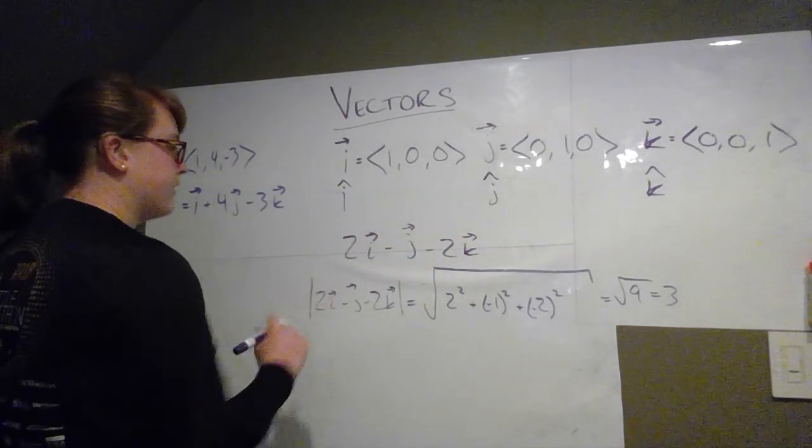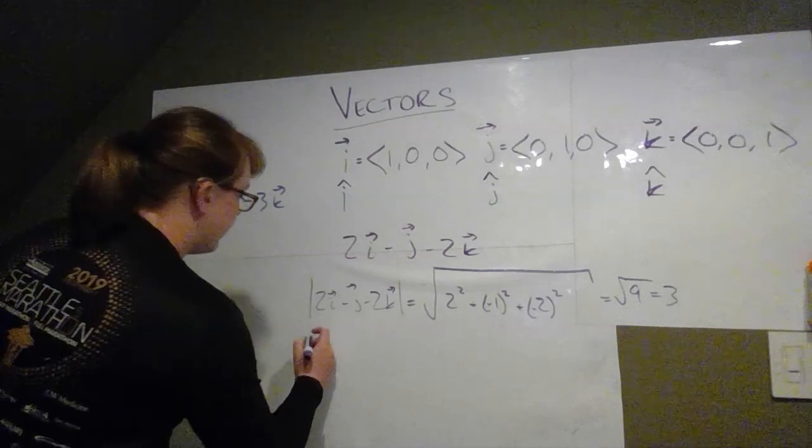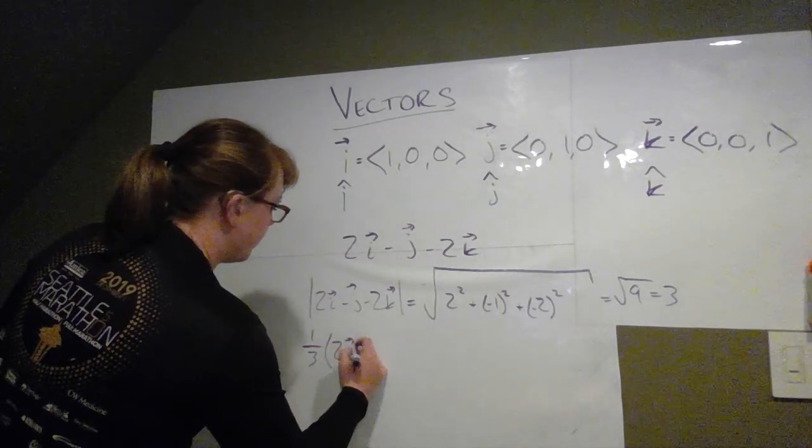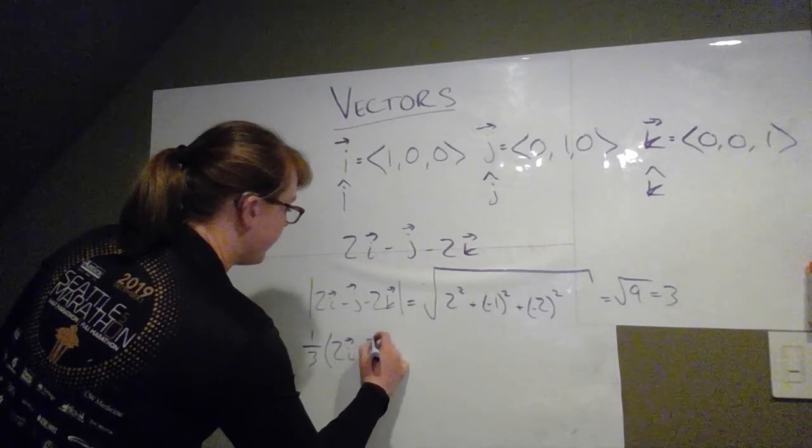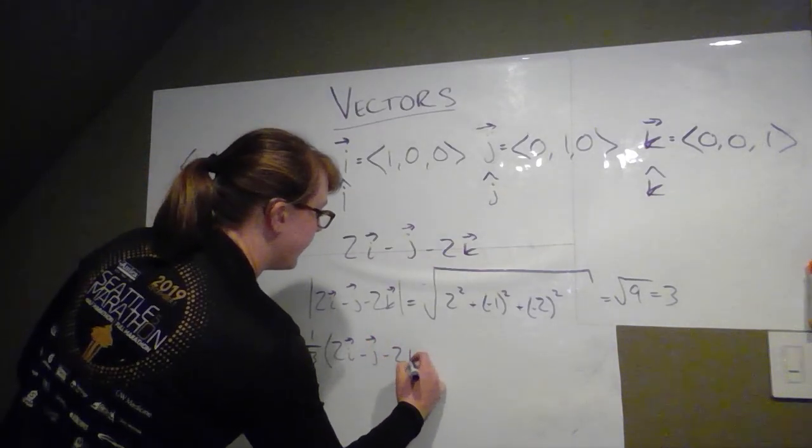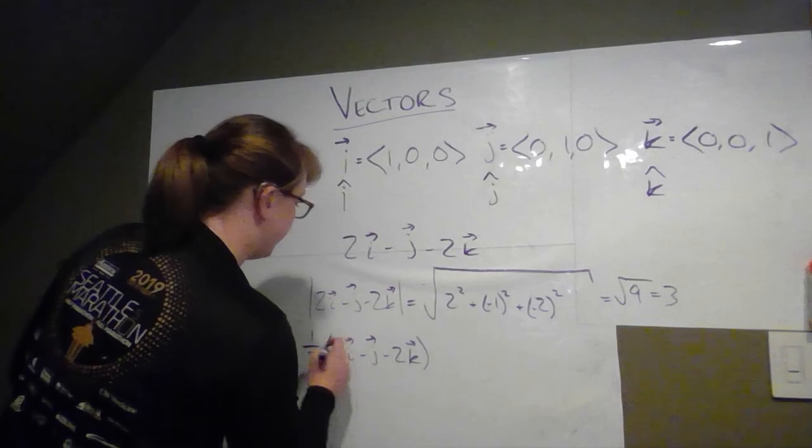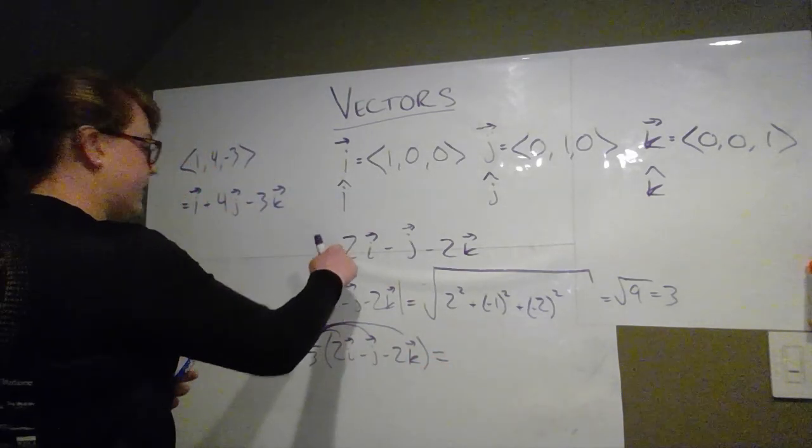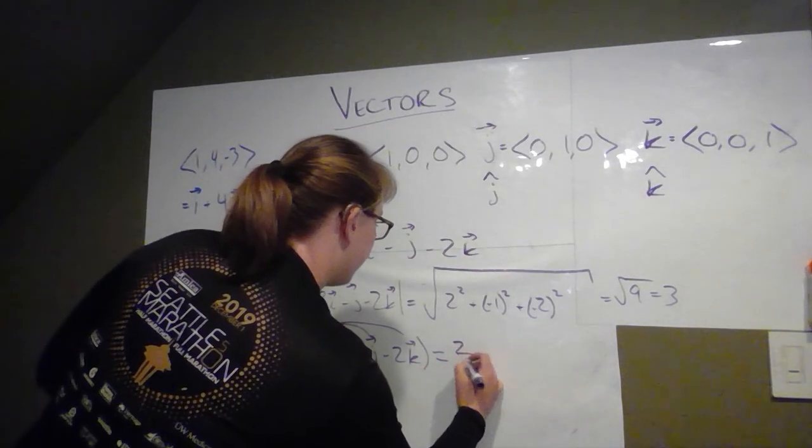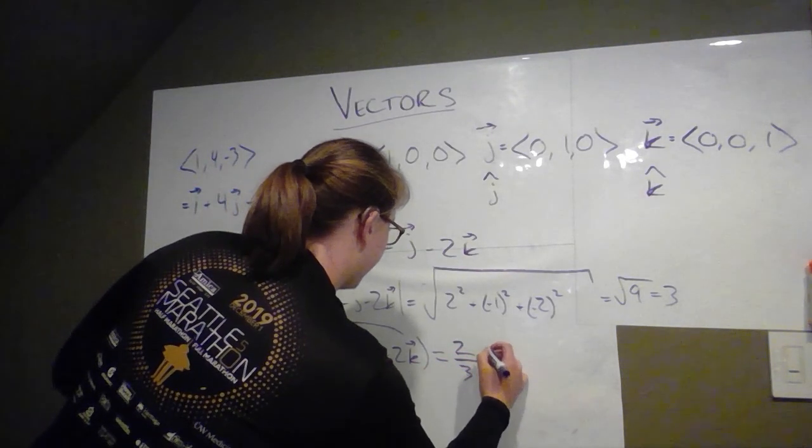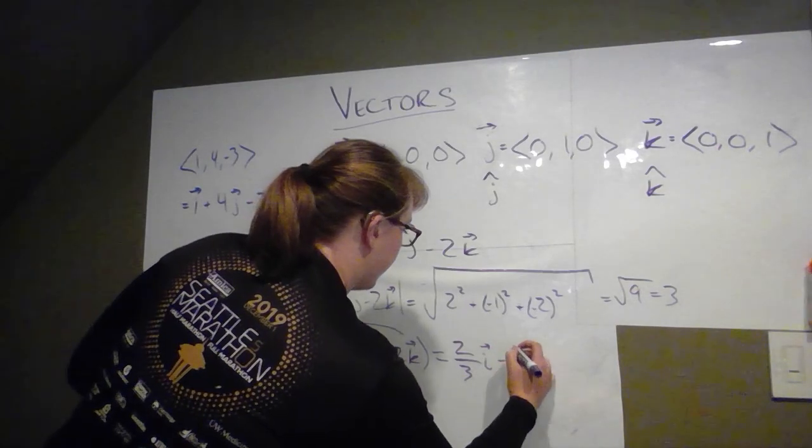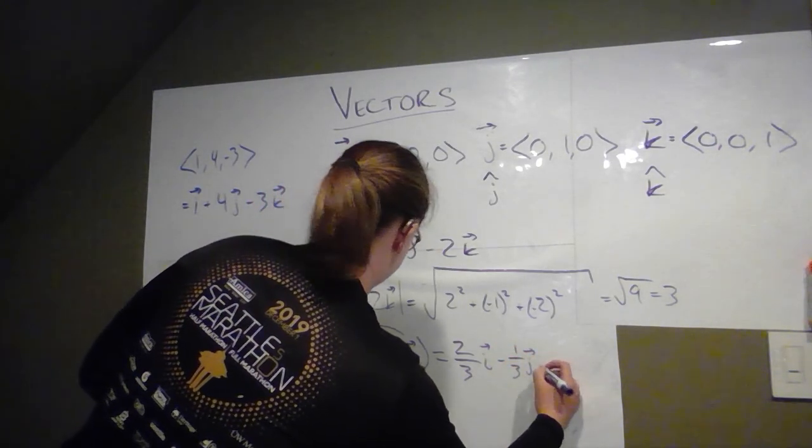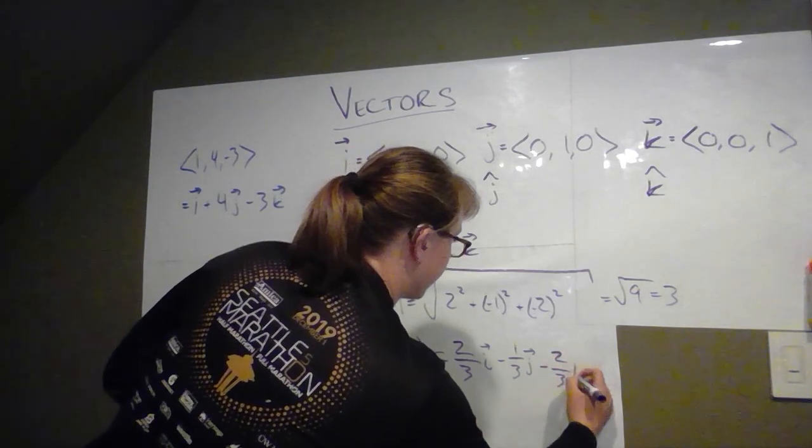So the length of this vector is 3 so now all I have to do is go and basically divide this original vector by 3. So 1 third times 2i minus j minus 2k. We distribute it through and the new vector that we get that's a unit vector version of this is 2 thirds i minus 1 third j minus 2 thirds k.